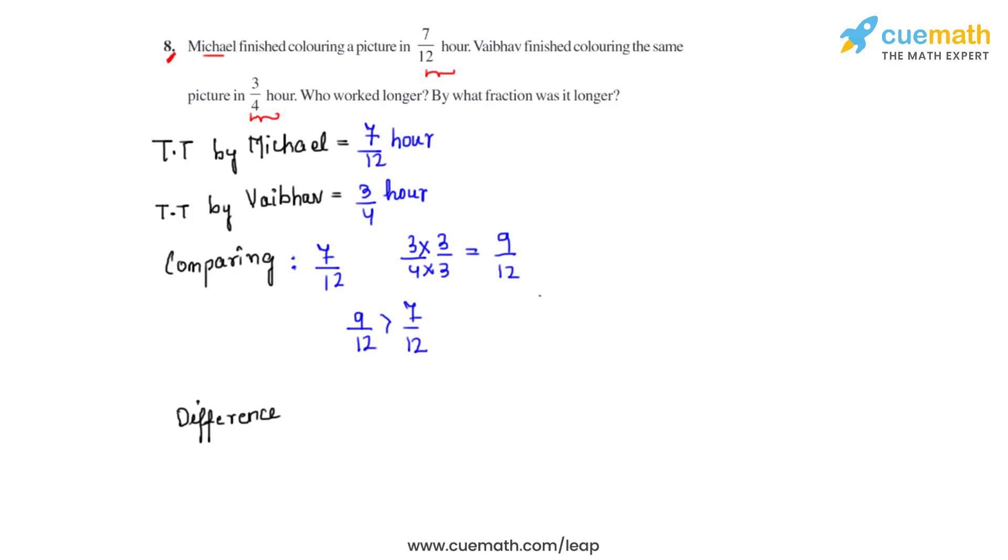Now what we have to do is find the difference, that by what fraction was it longer. So we will do 9 over 12 minus 7 over 12. The denominators are same, so we just directly find the difference of the numerators and that is 2 over 12.